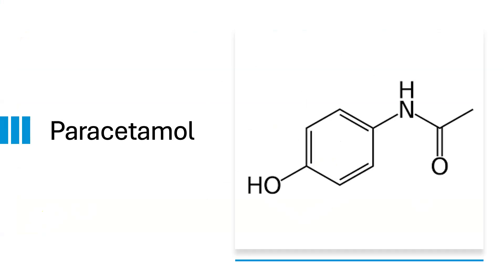Next we have paracetamol, also known as acetaminophen. It is one of the most commonly used pain relievers and fever reducers. We will draw a benzene ring first, then add the hydroxyl group and amide group at the corresponding positions.